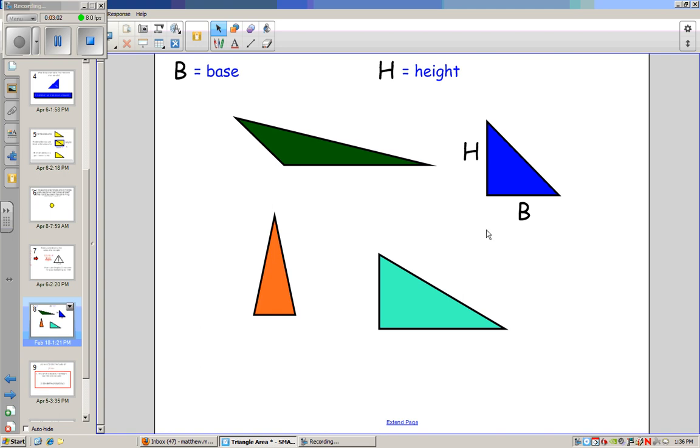But a couple things that are very important to remember. Our height has to be at the right angle, at a right angle to our base. If it's not, then it doesn't work. That's why we can't use this side over here for either the base or the height. There's no right angle over here and there's no right angle over here. So those aren't going to be our base or our height.